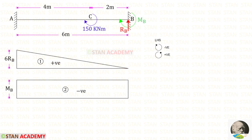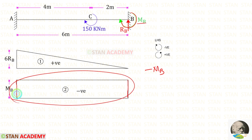Now let us draw the bending moment diagram due to Mb. Mb is acting in the clockwise direction, so it will be negative. Since it is a moment, it will be constant from point B all the way to point A. So we will have a rectangular shaped diagram.